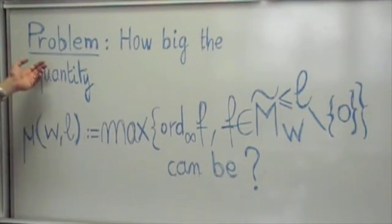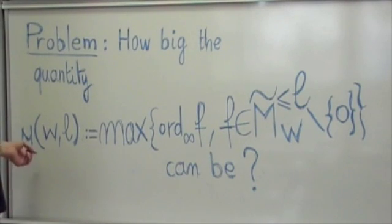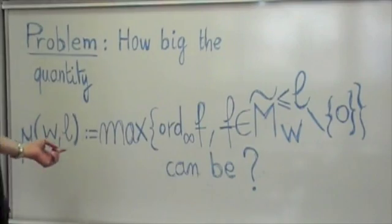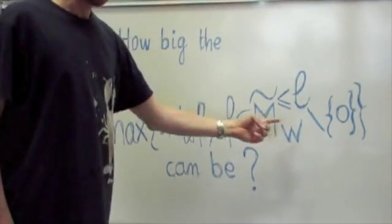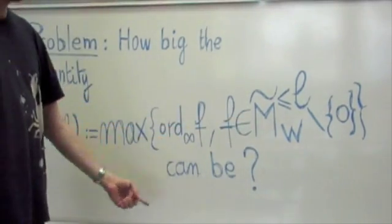One of the problems we deal with in this paper is the following. For fixed integers W and L, how much can a non-zero form in this space vanish at infinity?